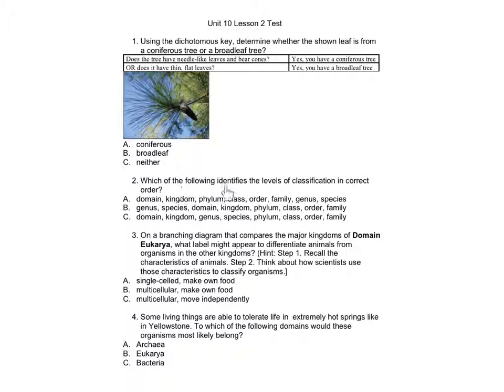Number 2: Which of the following identifies the level of classification in correct order? A: domain, kingdom, phylum, class, order, family, genus, species. B: genus, species, domain, kingdom, phylum, class, order, family. C: domain, kingdom, genus, species, phylum, class, order, family.